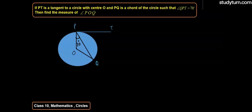If PT is a tangent to a circle with center O and PQ is a chord of the circle such that angle QPT is 70 degrees, then we need to find the measure of angle POQ.